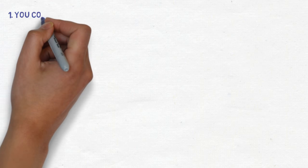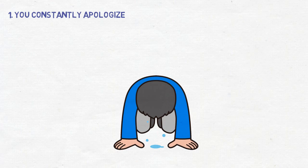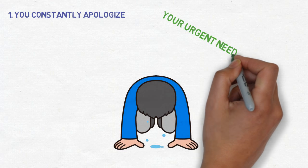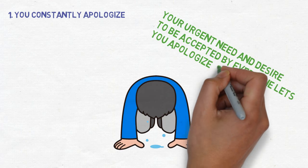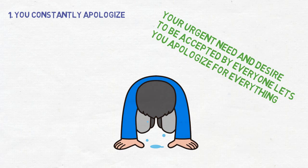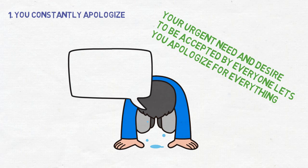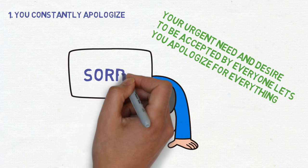Number 1. You constantly apologize. Sorry, sorry, sorry. You always feel bad and are afraid to upset anyone. Your urgent need and desire to be accepted by everyone lets you apologize for everything. No matter how big or how tiny, and perhaps even for things that you didn't do, you always end up saying sorry.